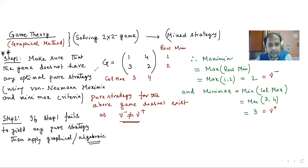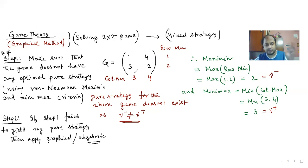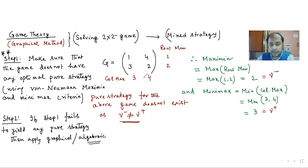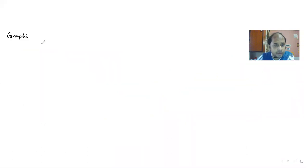The maximin and minimax criteria means you find these values, and if the values are the same, a saddle point exists and pure strategy of the game exists. But if they are not the same, then pure strategy of the game does not exist. So we know that this particular game, if it has a solution, that solution is a mixed strategic solution — it is not a pure strategic solution. Let's start the graphical method.